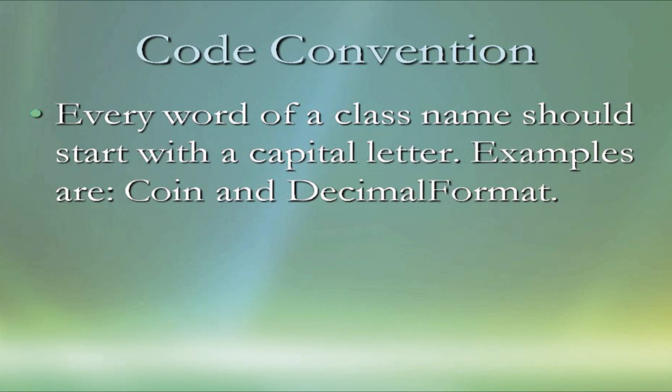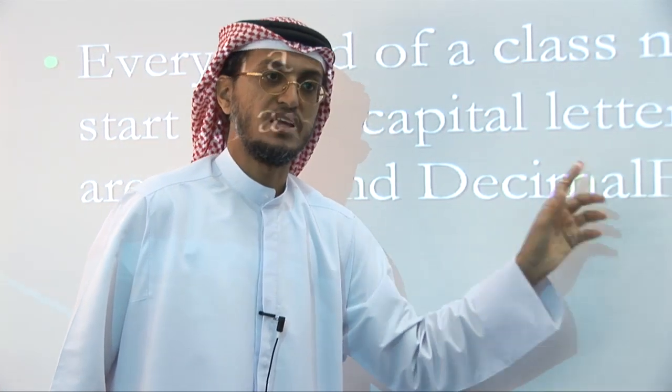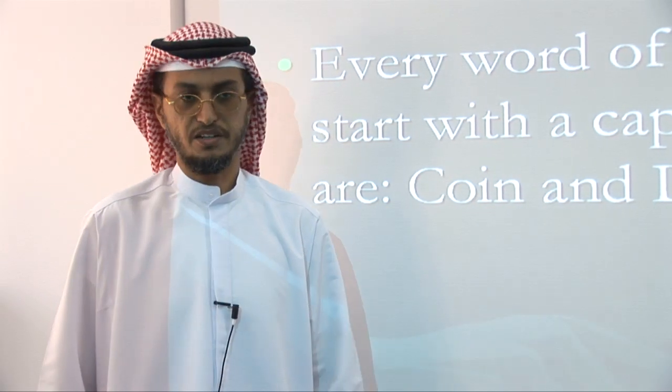One more convention. This is not a requirement but it is recommended from Sun Microsystems, the creators of the language of Java. Every word of a class should start with a capital letter. For example, coin represents a class name. Observe that we started with a capital C. Decimal format, as a second example, is a name of a class. Observe this name consists of two words: decimal and format. Decimal we have started with capital D, format we have started with capital F. This is a recommendation and it's a very good recommendation that will keep you and other programmers clear about naming of classes.